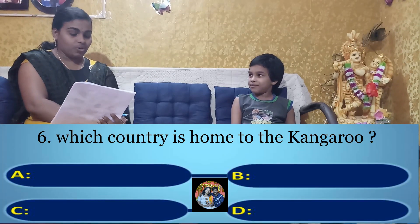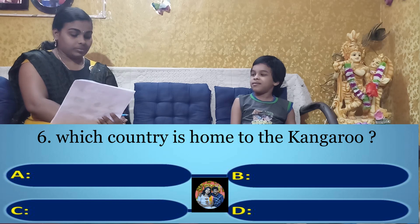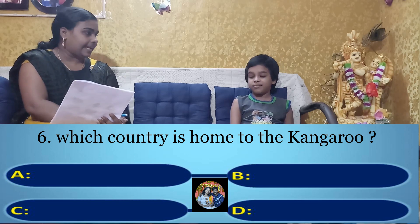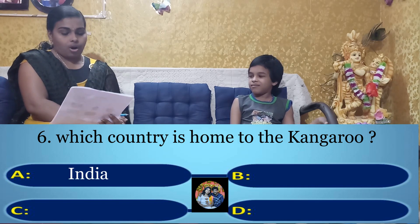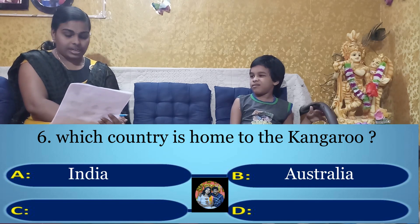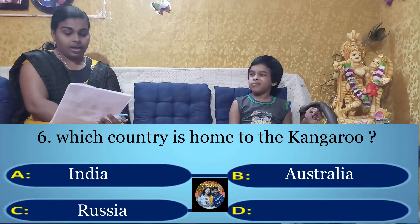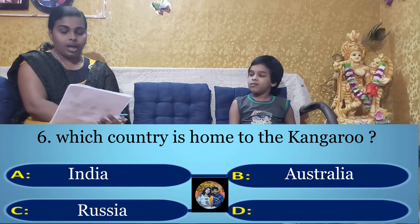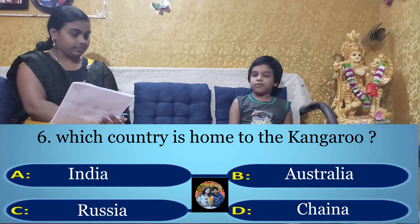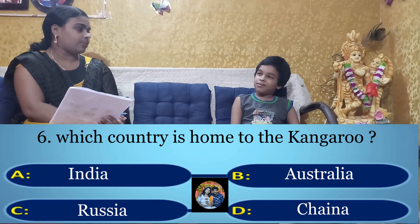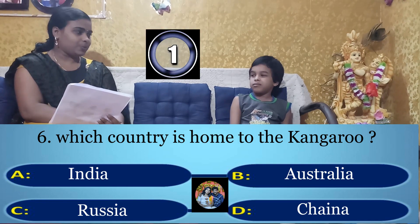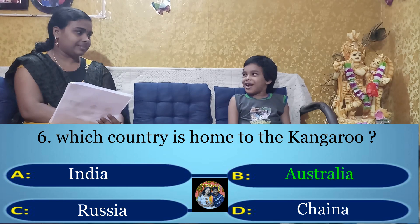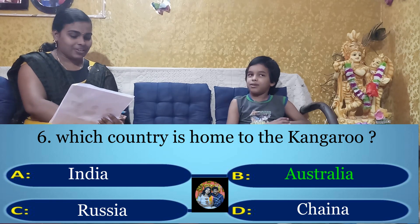Your sixth question: Which country is home to the kangaroo? Option A: India, Option B: Australia, Option C: Russia, Option D: China. Your time starts now. Australia. Yes, the right answer is Option B: Australia.